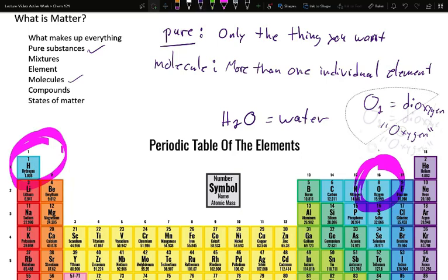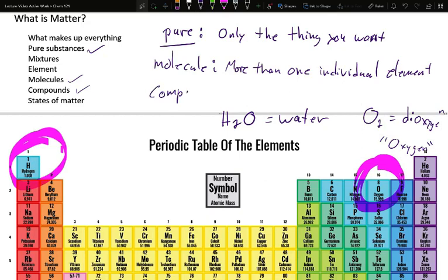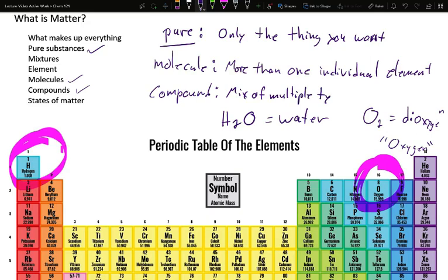Now there's a difference between these two, and that is compounds. A compound is a mix of multiple types of elements. So if we think down here, I've got water and I've got dioxygen. Both of them are molecules, because they have more than a single element, or individual element, present. Even if it's two of the same, that's still two different individuals. So they're both molecules, but only water is a compound. Water has hydrogen and oxygen. That means it has multiple types of elements. Dioxygen only has the one. It remains a molecule, but it is not a compound.